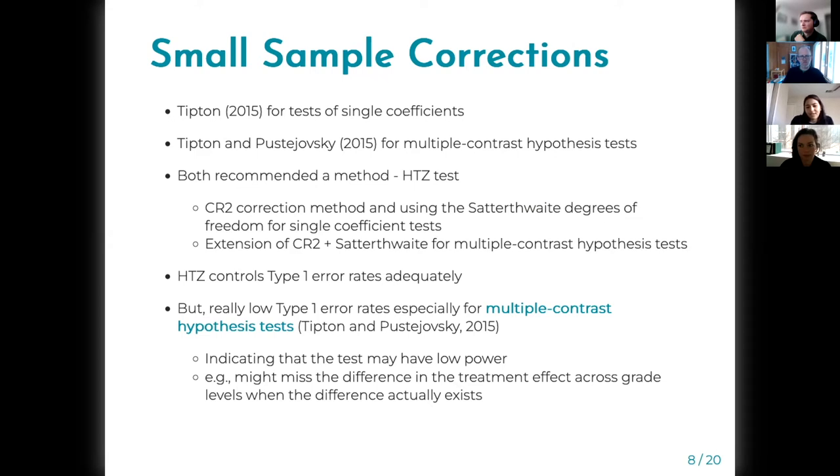The studies found that the HTZ test controls type I error rates adequately but it has really low type I error rates, especially for multiple contrast hypothesis tests, indicating that the test may have low power.